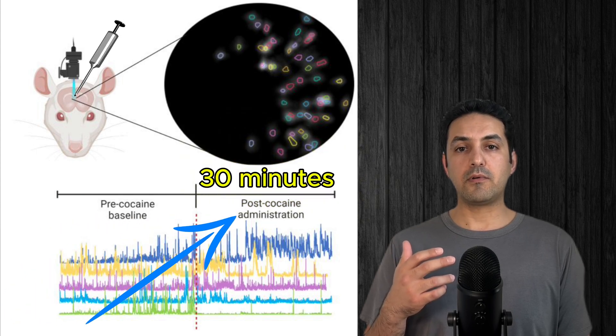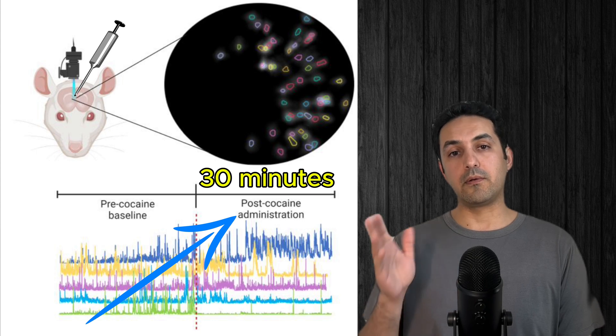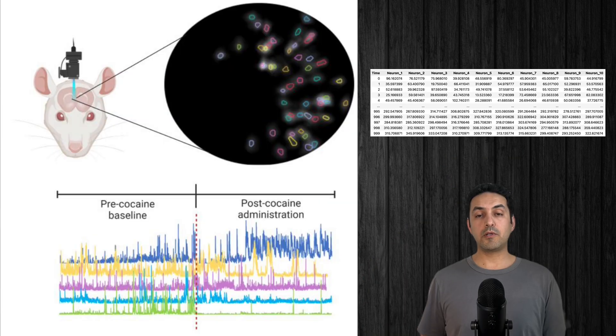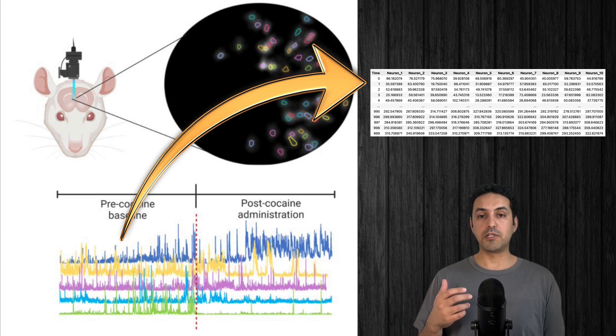After that, the rat was given cocaine, and its brain activity was recorded for another 30 minutes. The recorded movies of the activity of neurons were then pre-processed to generate a spreadsheet, with the columns being the intensity of light emitted from the neurons in the rat's brain.